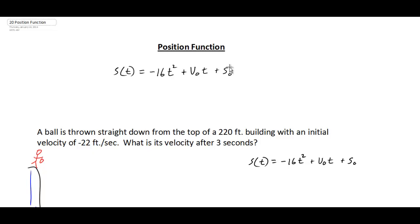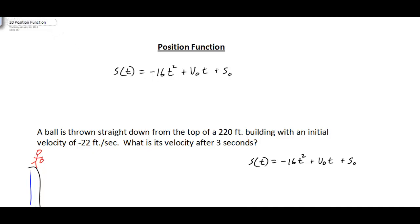This video is going to look at an example of dealing with vertical motion. To do that, we want to look at our position function: S of t equals negative 16t squared plus v-sub-zero times t plus S of zero. Let's go through and identify what each of these variables represent.